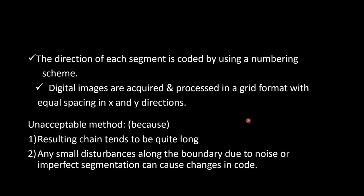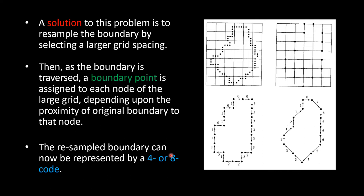Digital images are processed in a grid format with equal spacing in X and Y directions. This is an unacceptable method because the resulting chain tends to be too long. Any small disturbances along the boundary due to noise or imperfect segmentation can cause changes in the code. So how to overcome this?